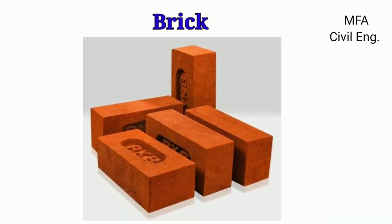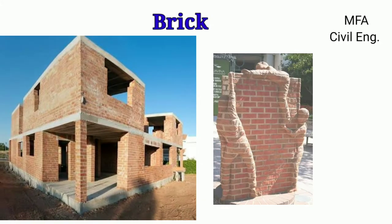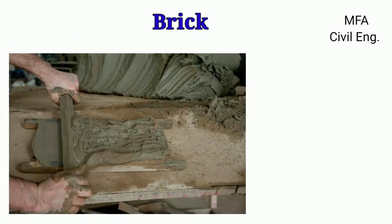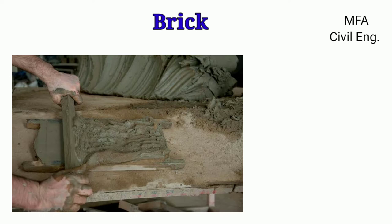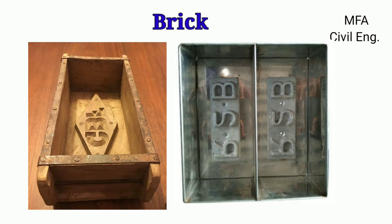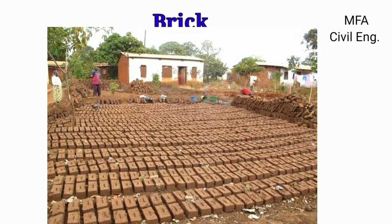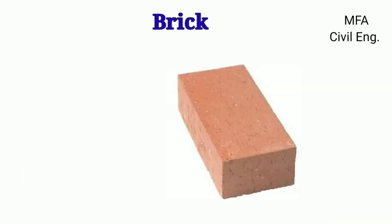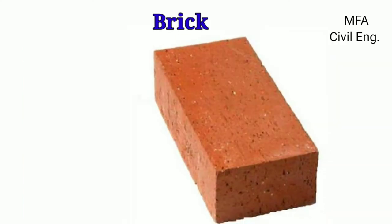Bricks are made of clay and widely used in building construction and architectural composition. Bricks are obtained by molding a plastic mass of suitable proportions of earth, which mainly consists of silica and alumina, in a timber or steel mold. Molded bricks are first allowed to dry and then burnt in a kiln to achieve strength. Bricks are generally rectangular in shape, having a length twice the width plus the thickness of the mortar joint.